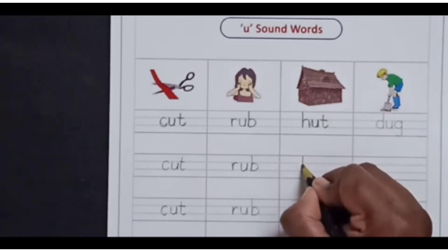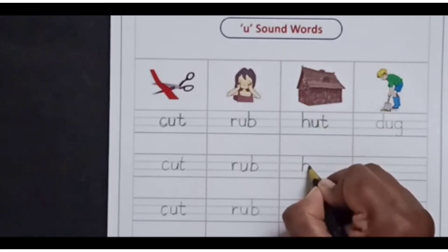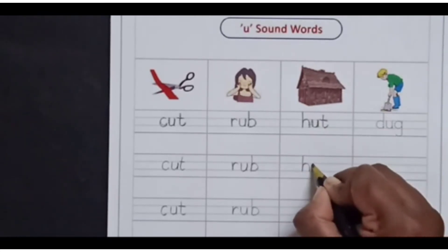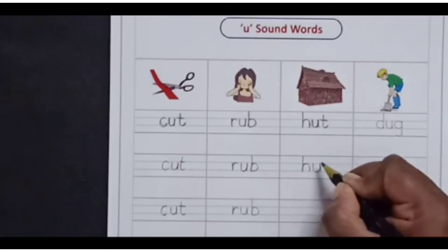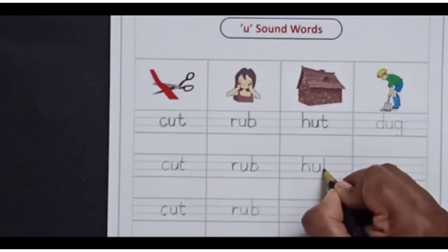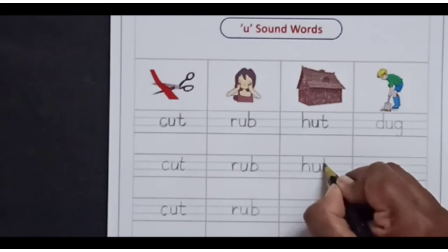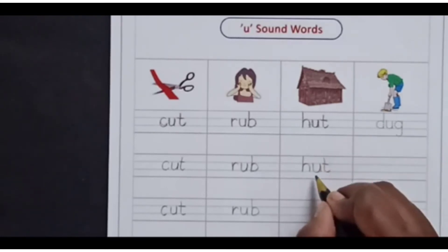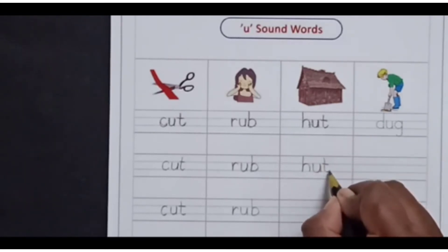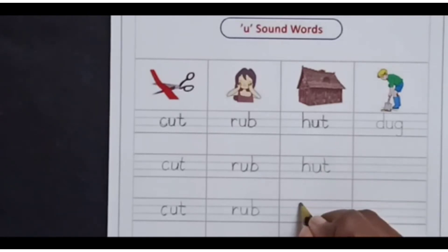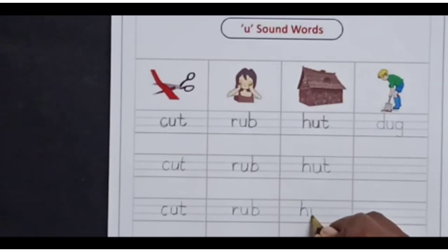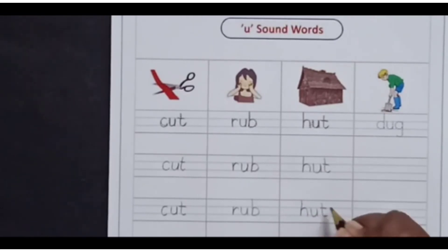The sound of H is H, the sound of U is U, and the sound of T is T. H-U-T, hut.